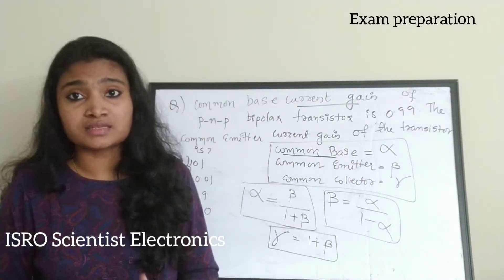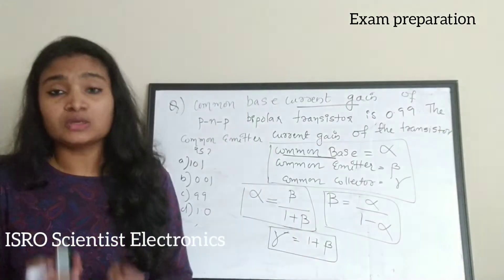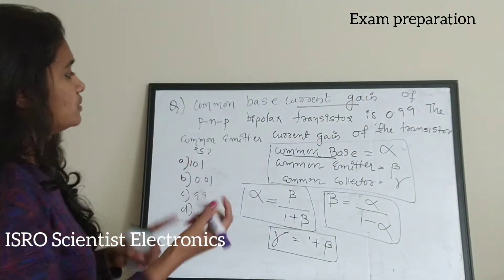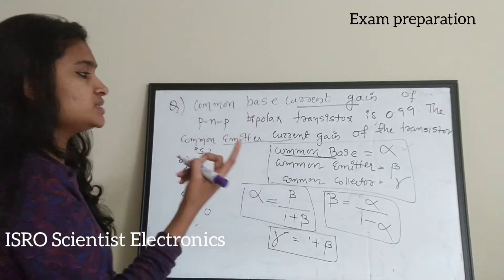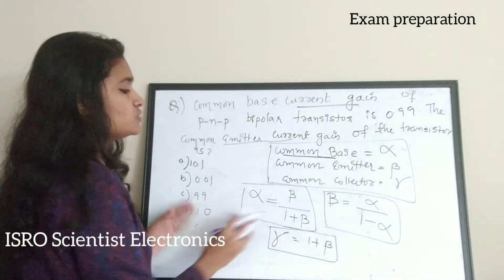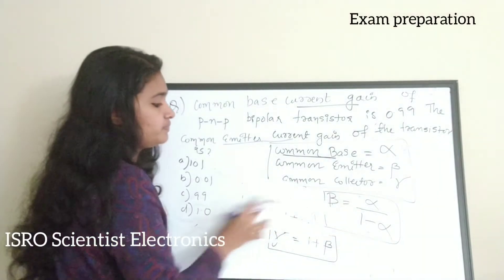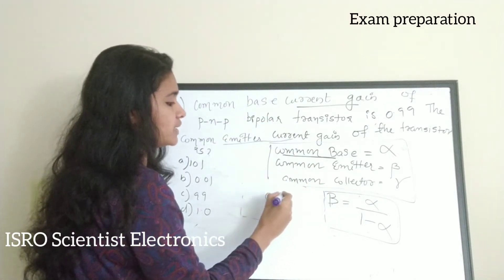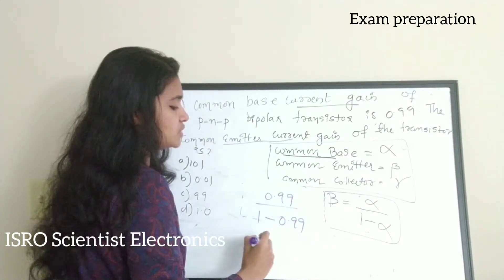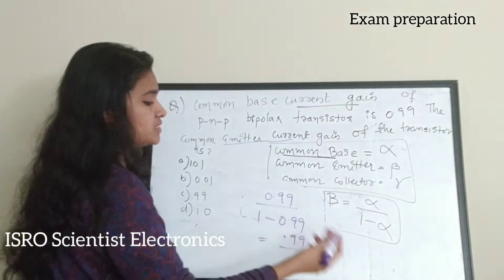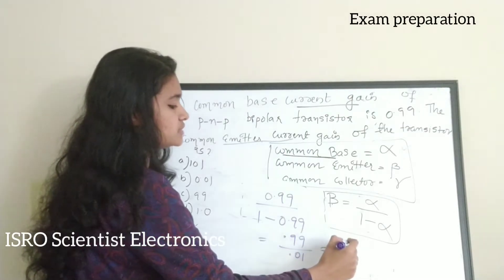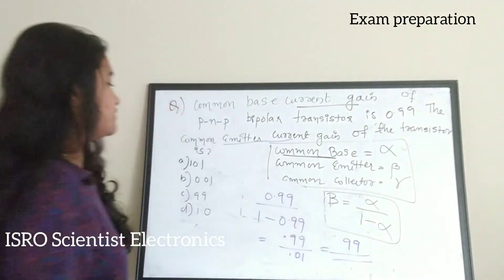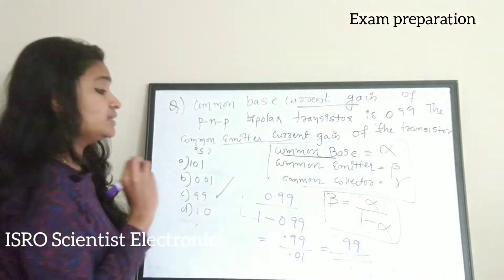The question is simple: they have given the common base gain alpha and are asking for the common emitter gain beta. Using beta = alpha / (1 - alpha), substituting alpha = 0.99: beta = 0.99 / (1 - 0.99) = 0.99 / 0.01 = 99. The correct answer for this question is option C, which is 99.